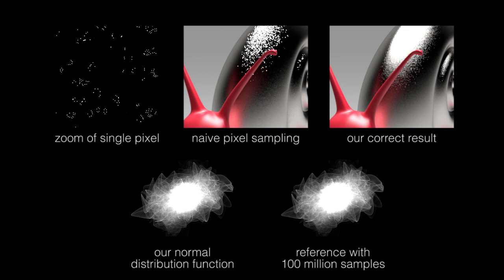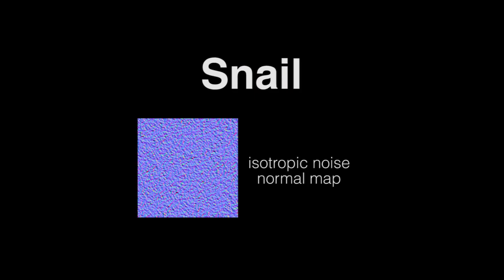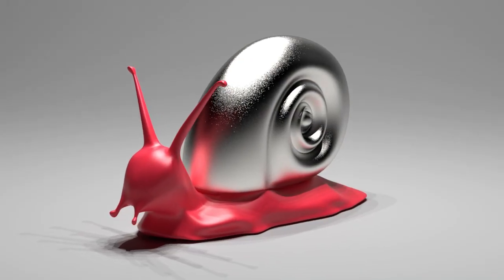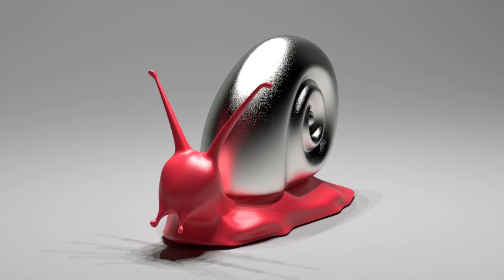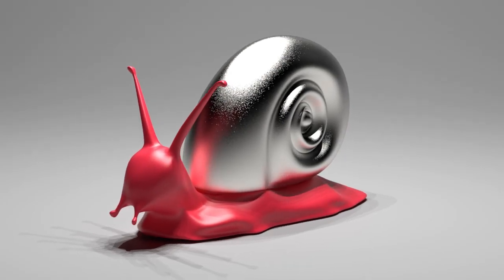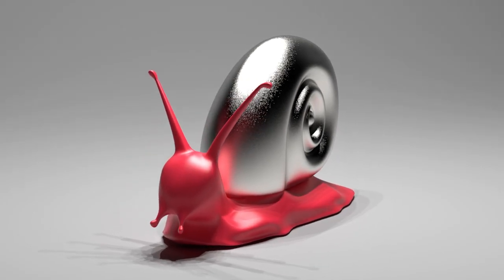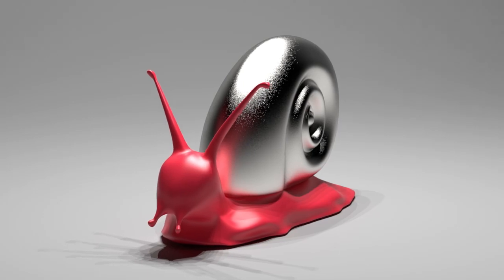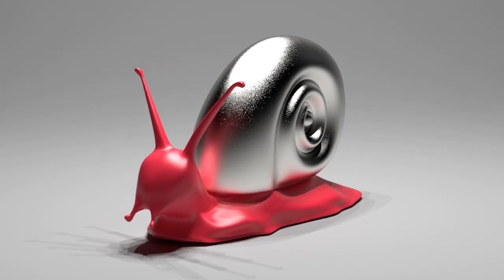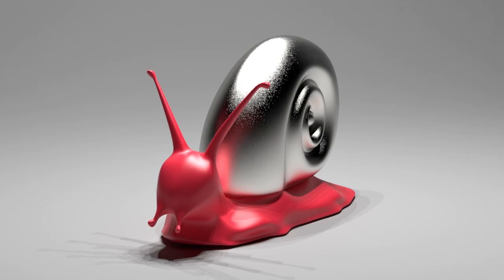Please see the paper for details. The snail's shell has a normal map made from fine procedural noise, and is lit by nine point lights. Even though the features on the map are smaller than a pixel, the highlight is far from smooth, showing glint patterns over time.